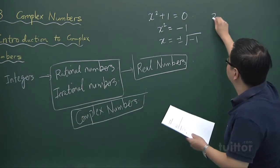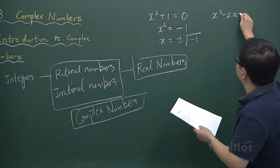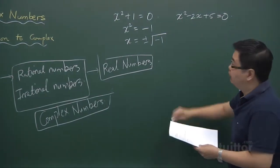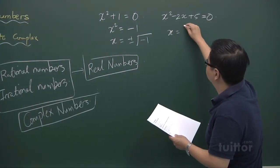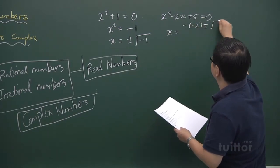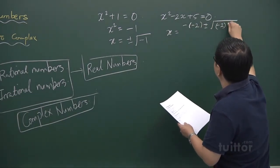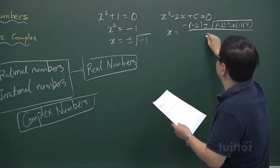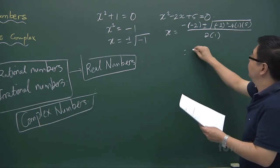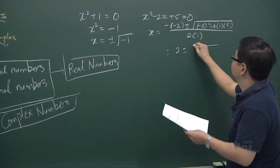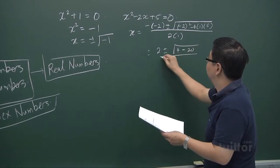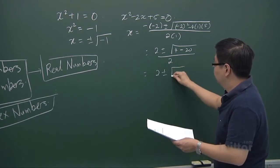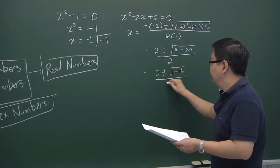Likewise, another form of equation, x squared minus 2x plus 5 equal to 0. If you use the quadratic formula to solve for x: minus b plus minus b squared, take away 4ac over 2a, then you get 2 plus minus 4 minus 20 over 2. And so we have 2 plus minus square root of negative 16 over 2.